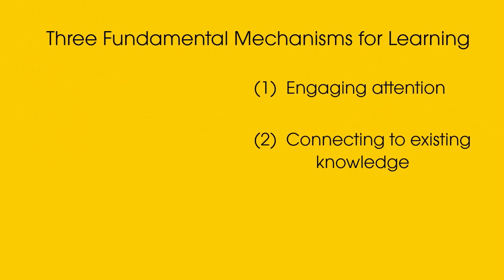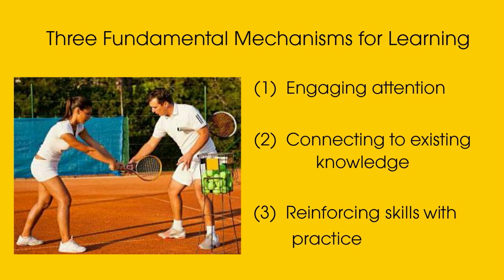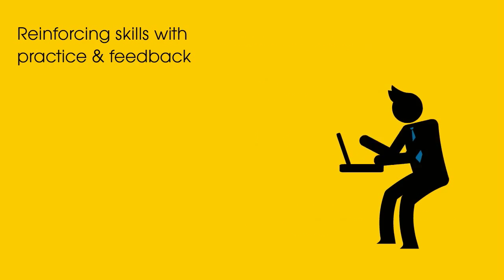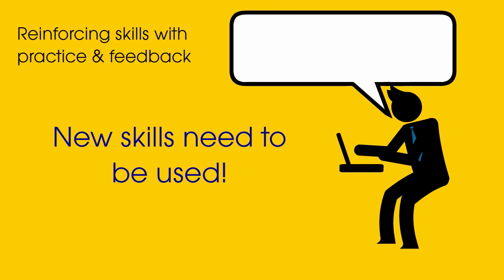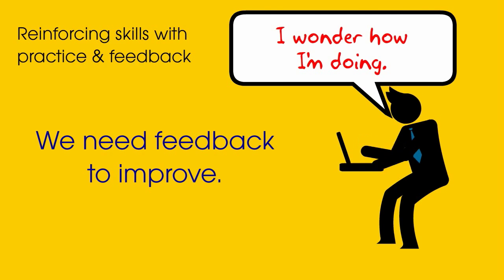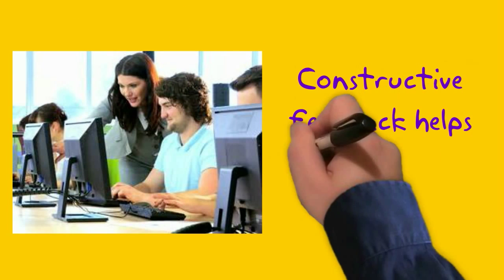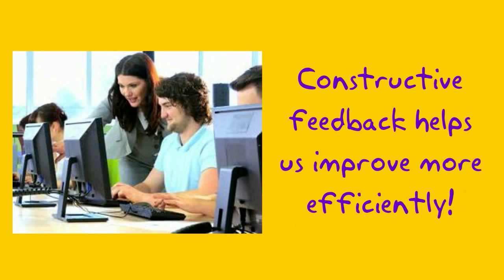The third mechanism is reinforcing new skills through practice and feedback. We need to use new skills in order to know we're actually learning, and we need feedback to know how to improve. Some things give immediate feedback on their own, but more often we need nuanced information about our performance to make efficient adjustments and improve.